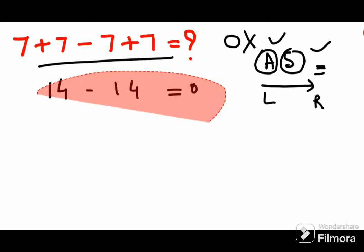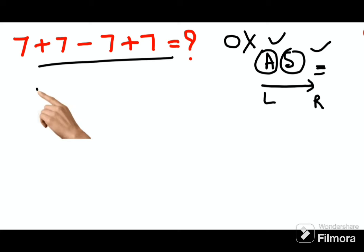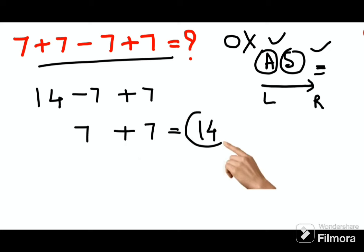So what is supposed to be done over here is you should have done 7 plus 7 is 14, minus 7, plus 7. So 14 minus 7 is again 7, plus 7 that will get you nothing but 14.